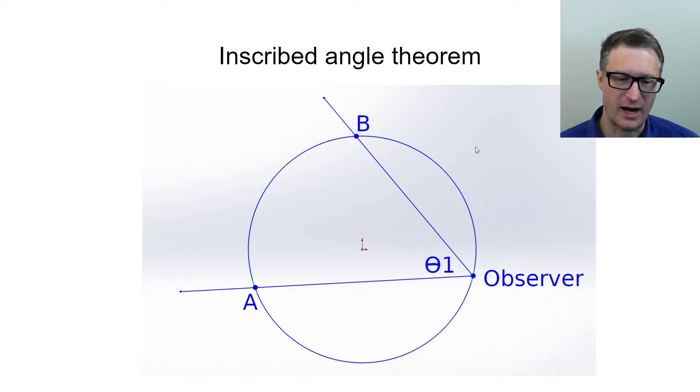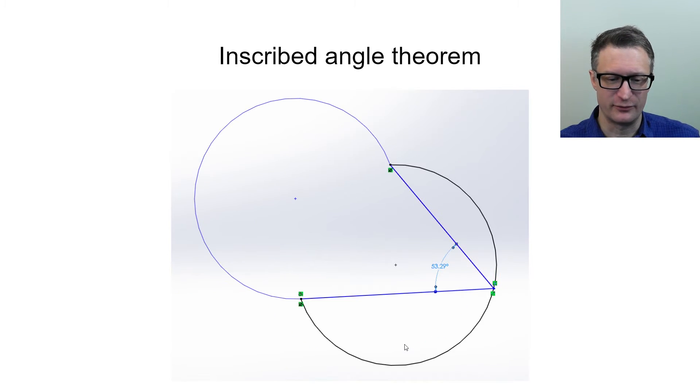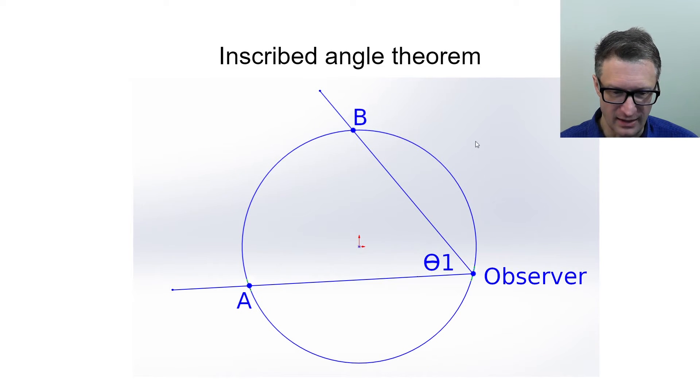Now we'll look at the inscribed angle theorem, and this says that given a fixed angle looking at two fixed points, the vertex here will pass along a circular path. To be technically correct, it's not really circular, it's two circles, but I am not using the second circle here, so I'm just going to ignore it. I'm going to call these points A, B, this is my observer, and this is theta one.